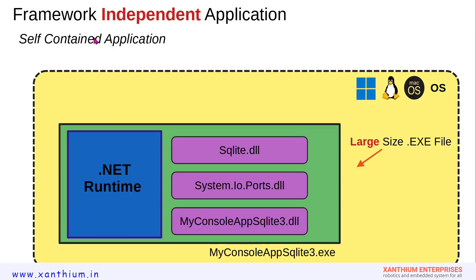This is the block diagram of a framework-independent application, also known as a self-contained application. It is similar to the previous one — the yellow box represents the operating system, which can be Windows, Linux, or Mac OS. We have our executable, myconsoleappsqlite3.exe, containing the required DLLs: sqlite.dll and system.io.ports.dll, as well as myconsoleappsqlite3.dll. Additionally, the .NET runtime and required files are also packaged inside the exe file.